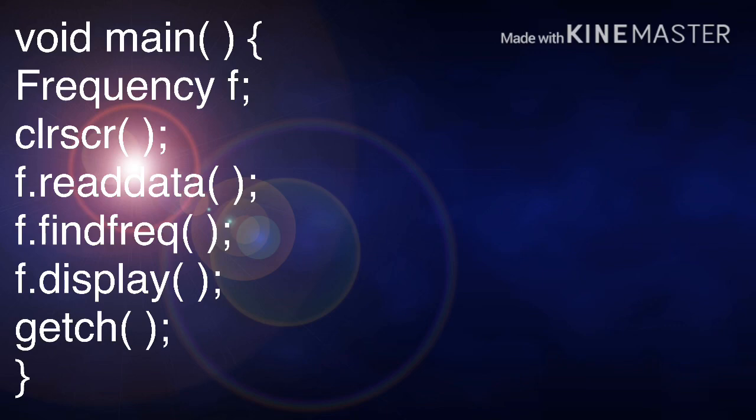Next, we are going to see the void main function. In this main function, you are going to declare an object. So inside the main, you have frequency. Frequency is the class name. Space f is an object. So frequency space f semicolon - that is declaration of an object. Next, clrscr clears the output screen.